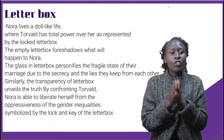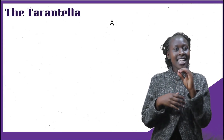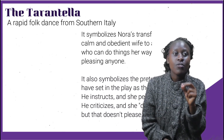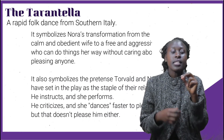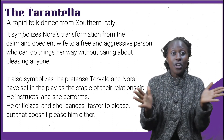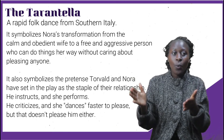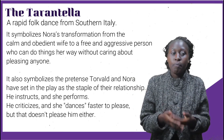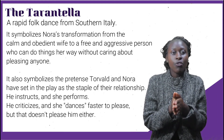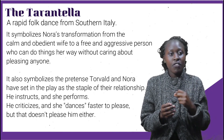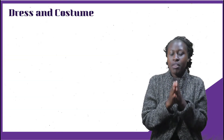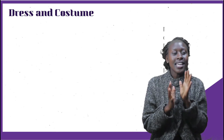The tarantella is another symbol in Ibsen's A Doll's House. A tarantella is a rapid folk dance from southern Italy. It symbolizes Nora's transformation from the common, obedient wife to a free and assertive person who can do things her own way without caring about pleasing anyone. It also symbolizes the pretense that has been set in the play as the staple of their relationship: he instructs and she performs, he criticizes and she dances faster to please him — but she never truly pleases him.